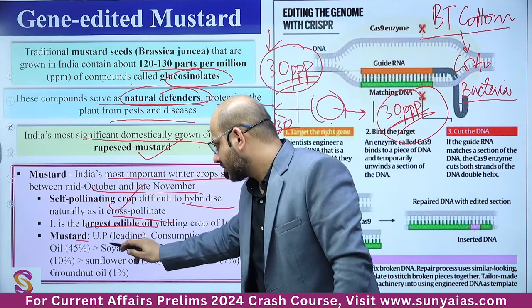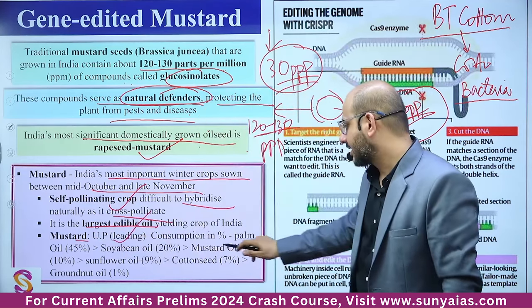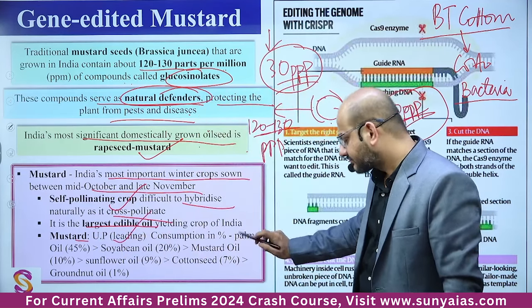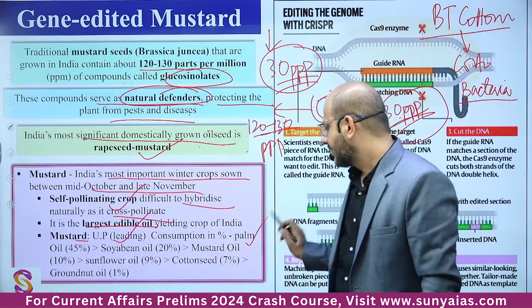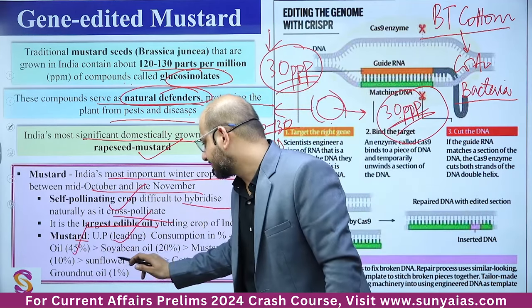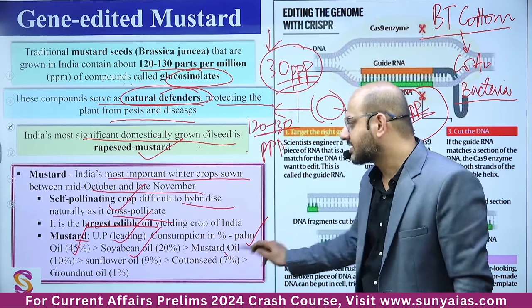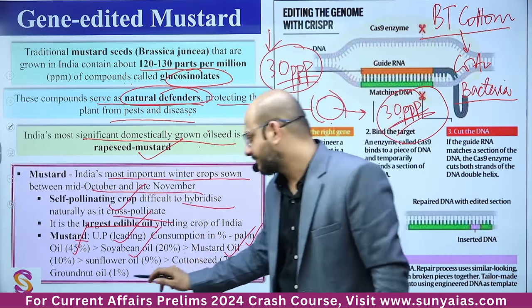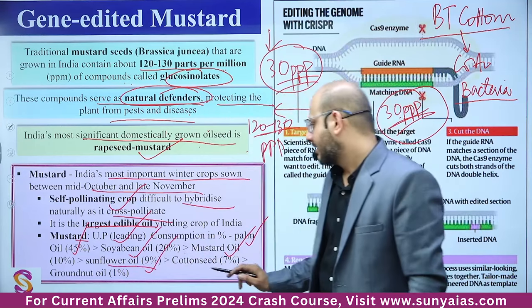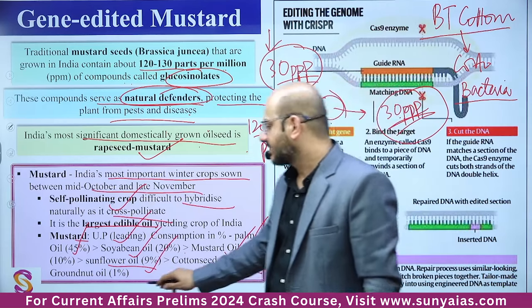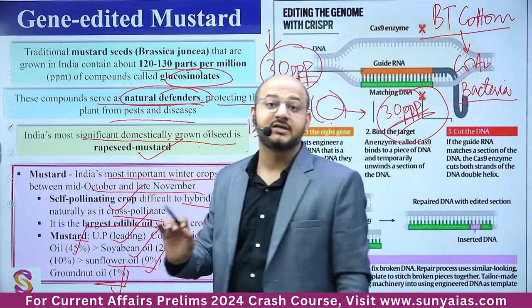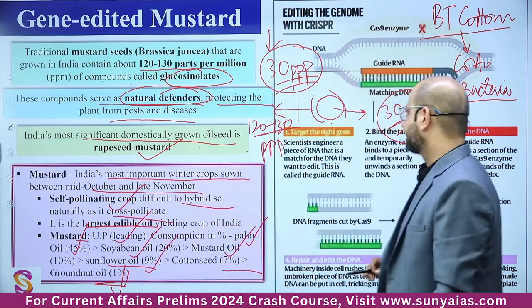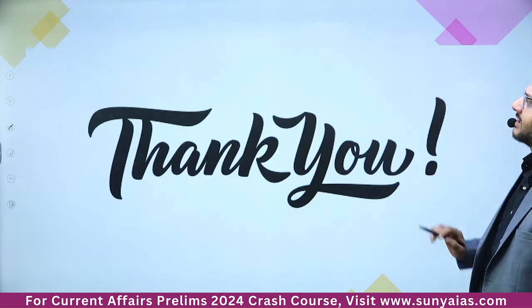By consumption share of edible oils in India: palm oil leads at 45%, followed by soybean oil at 20%, mustard oil at 10%, sunflower oil at 9%, cottonseed at 7%, and groundnut at 1%. Mustard has better oil yield than soybean. Thank you, and we'll meet tomorrow in another session of Top 50 Rapid Current Affairs.